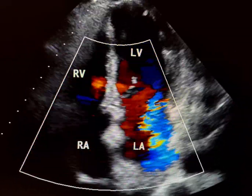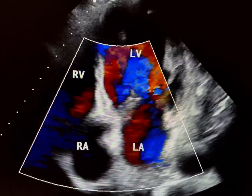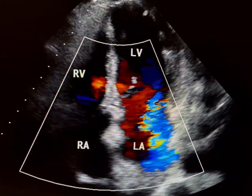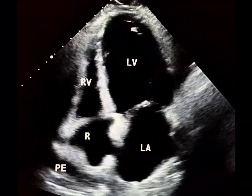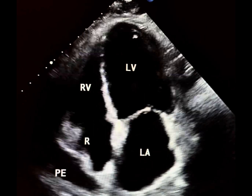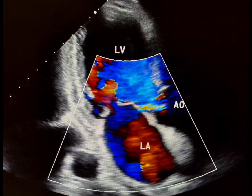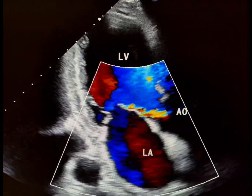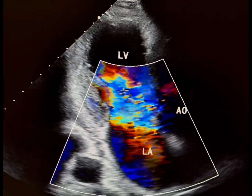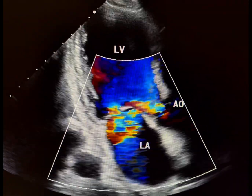This echocardiogram comes from a patient experiencing exacerbated dyspnea where severe mitral regurgitation (MR) is clearly seen. Before considering mitral valve surgery, it's crucial to identify the underlying cause of the MR. Sometimes, significant MR occurs even when the mitral valve itself is structurally normal. This type of MR is known as secondary or functional MR.